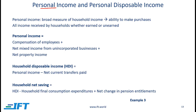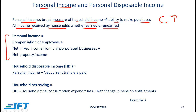From national income, we move to personal income. Personal income is a broad measure of household income and gives a sense of consumers' ability to make purchases — the higher the personal income, the higher the consumption in an economy. Personal income includes all income received by households, whether earned or unearned, and has three components: total compensation received by employees, net mixed income for unincorporated businesses, and net property income.